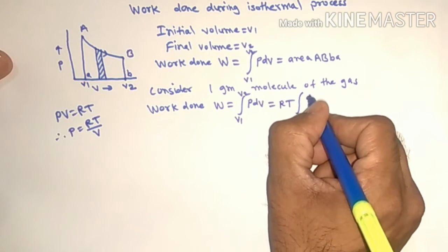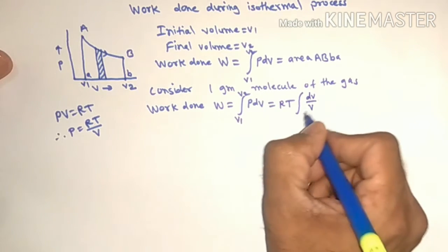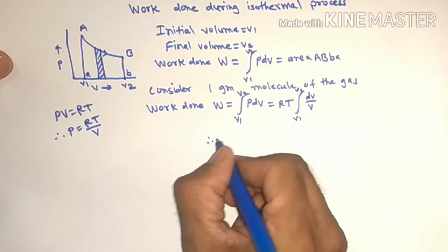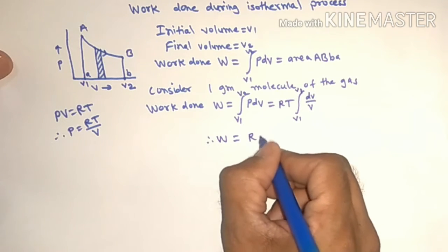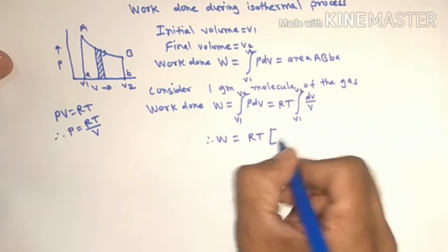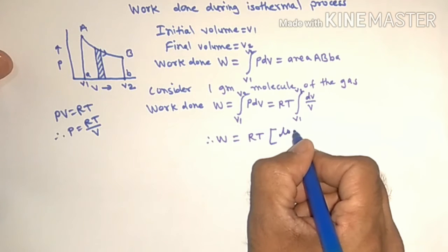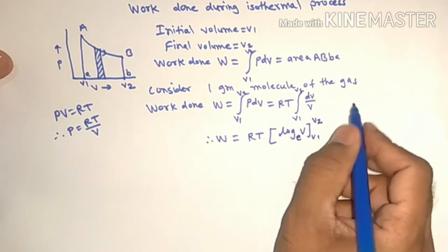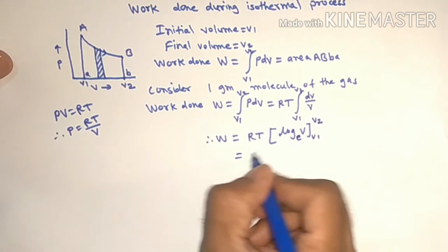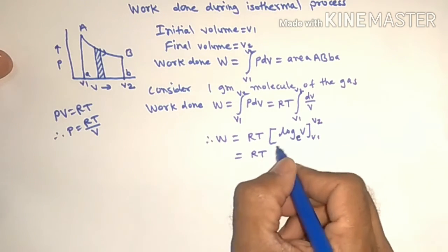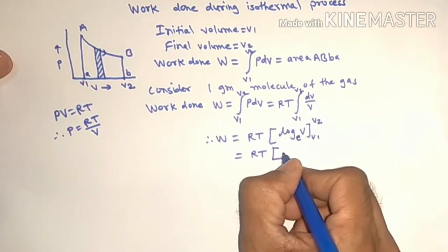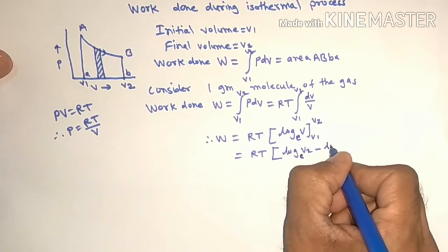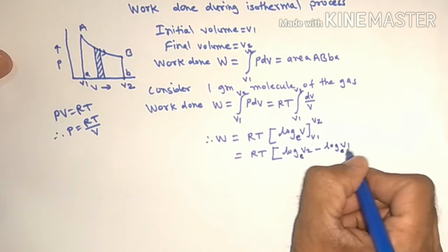Integration of dV upon V between limits V1 to V2. So W equals RT integration of dV upon V is log V base e between limits V1 to V2. So it equals RT into bracket log of V2 to the base e minus log of V1 to the base e.